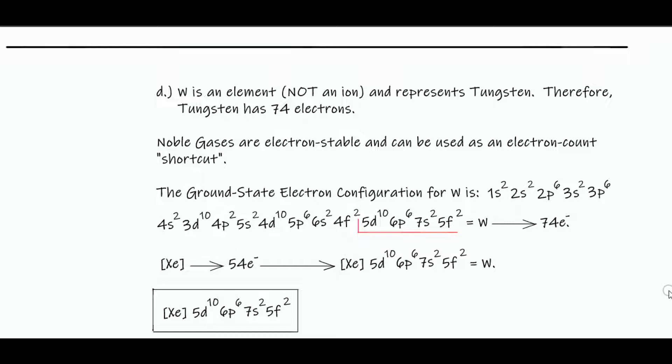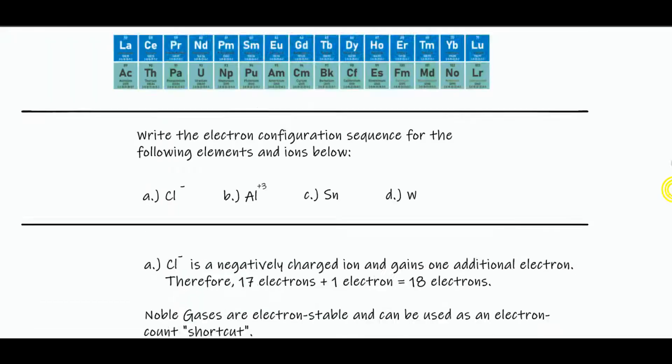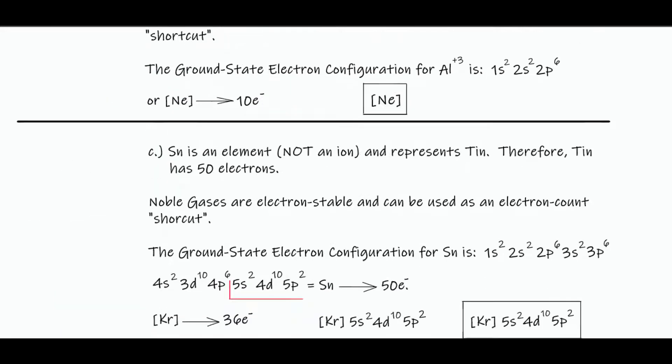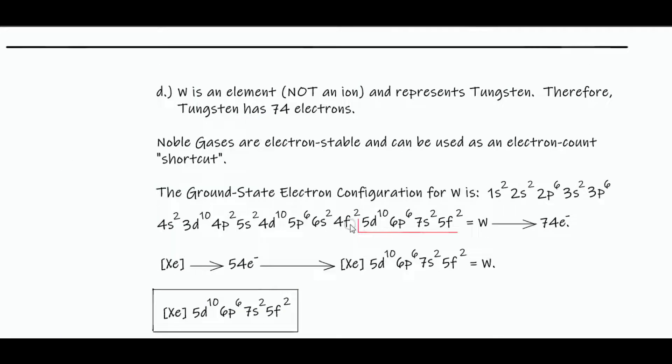F orbital can contain a maximum of 14, but we only put 2 in there, not 14, because 2, 4, 10, 12, 18, 20, 30, 32, 34, 44, 50, 52, 54.